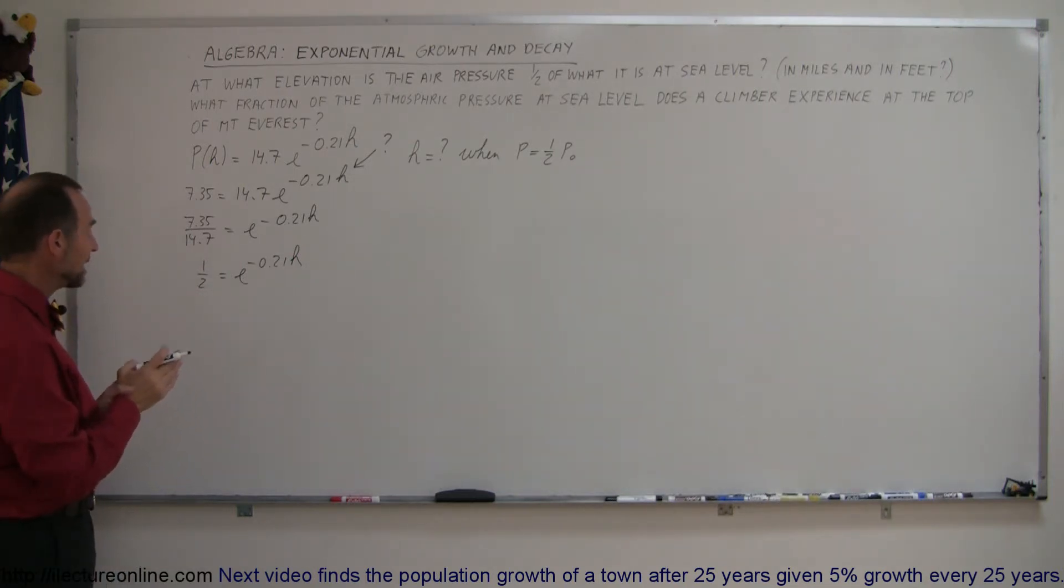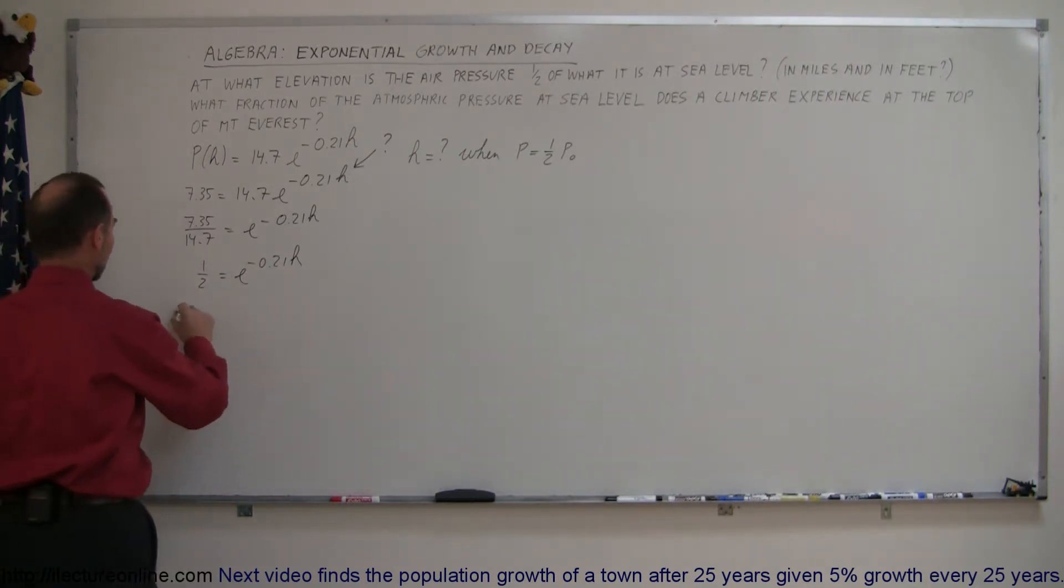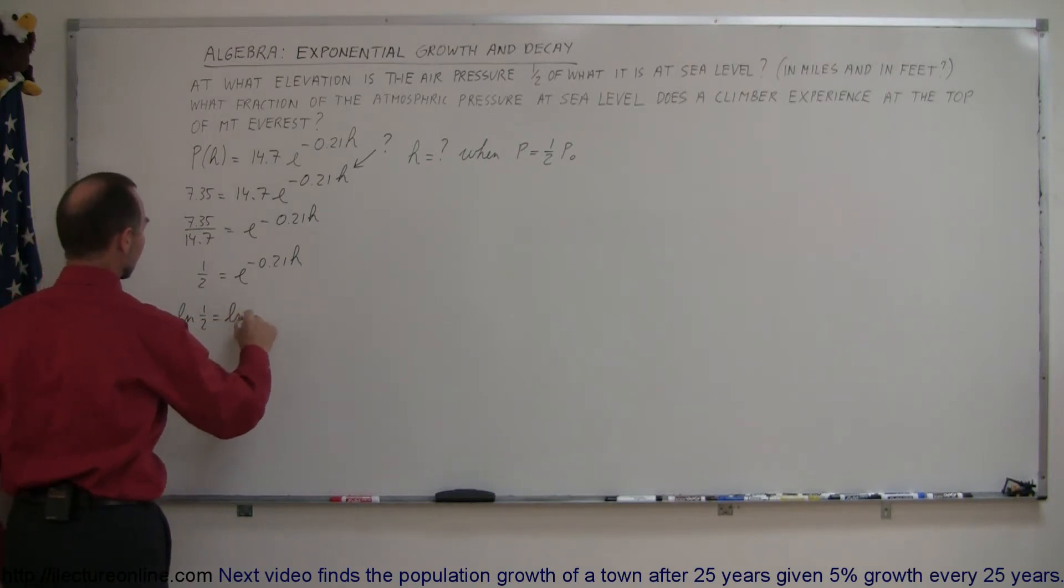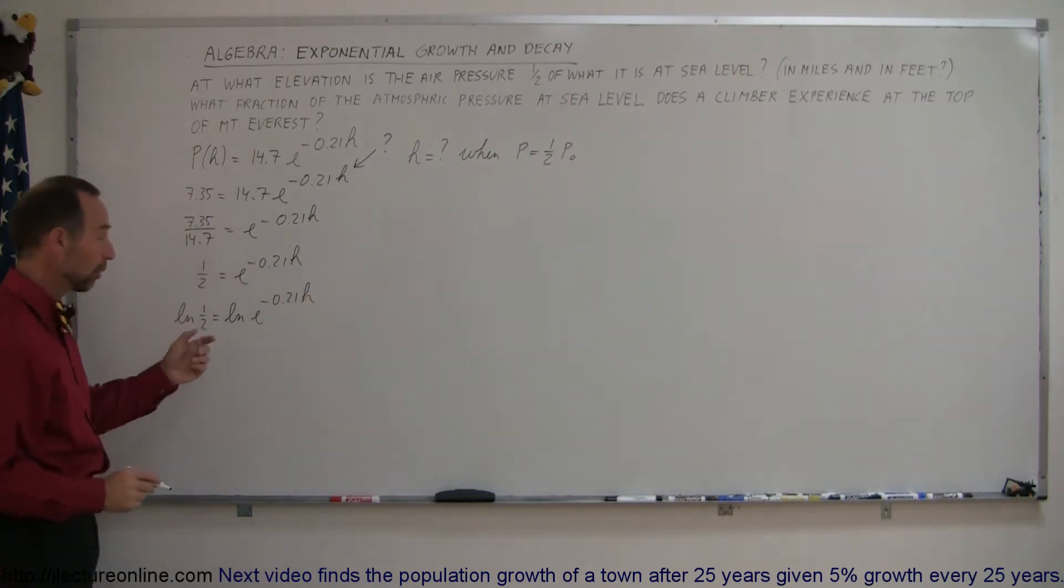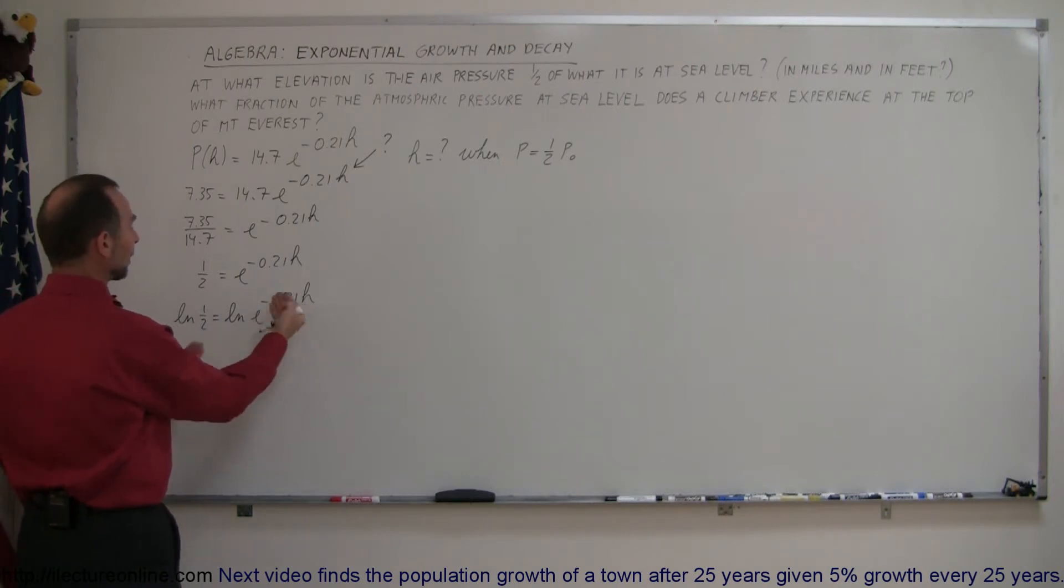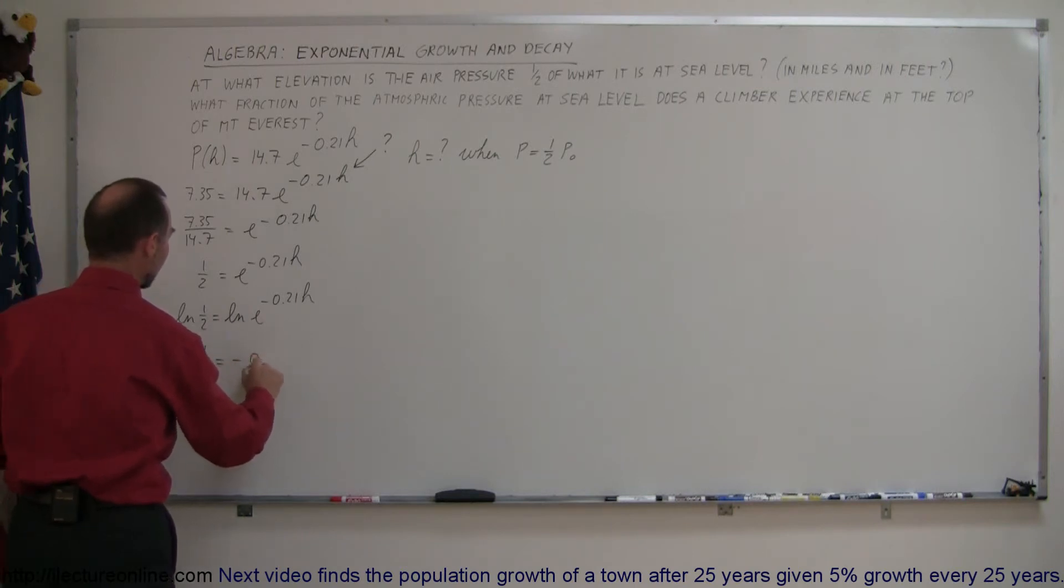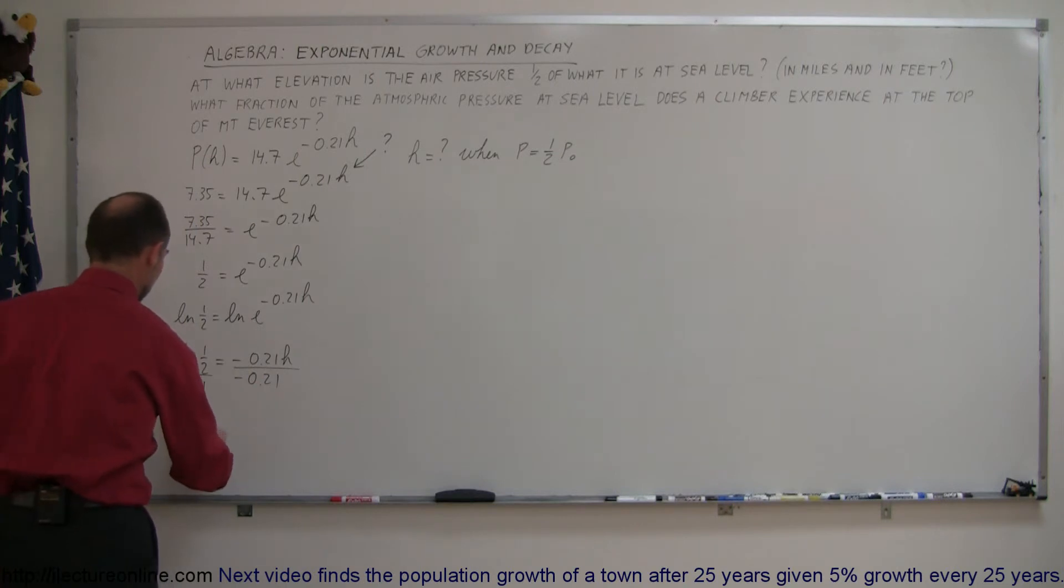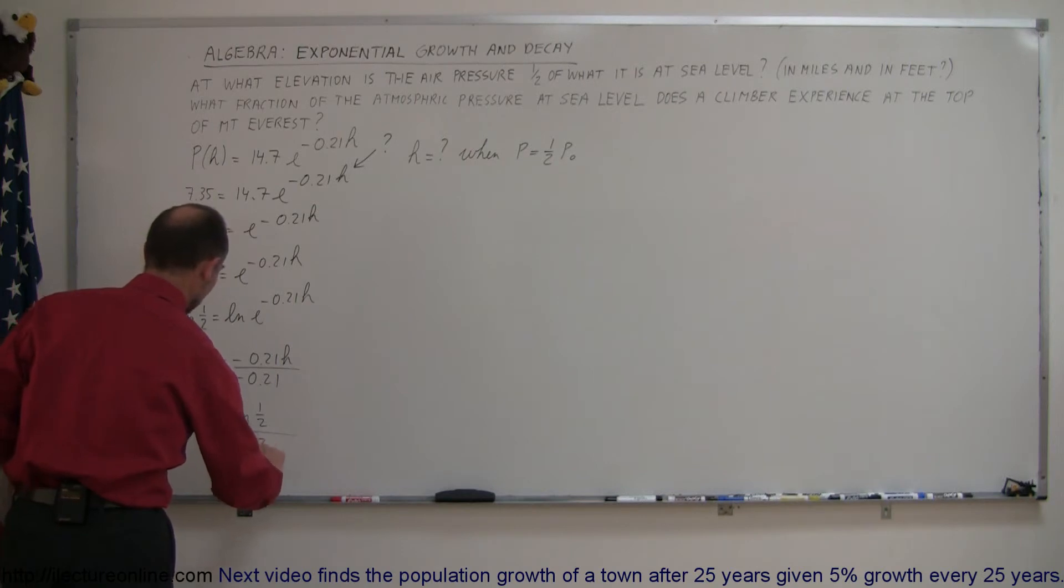At this point we're going to take the natural log of both sides: ln(1/2) = ln(e^(-0.21H)). We do that to get rid of this exponential form so we can isolate H, because the natural log of e^(-0.21H) is simply the exponent. So ln(1/2) = -0.21H. Then dividing both sides by -0.21, we have H = ln(1/2) / (-0.21).